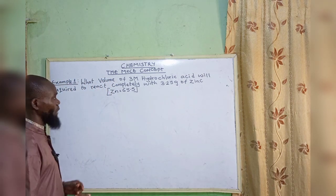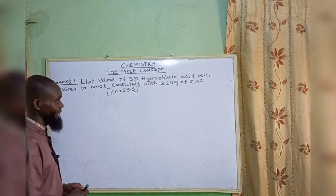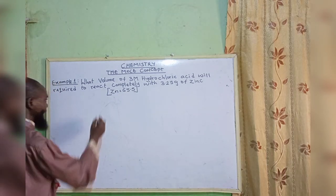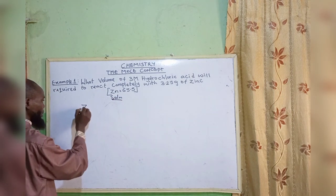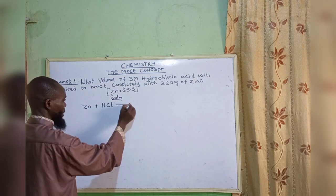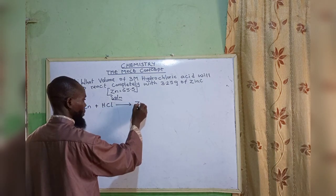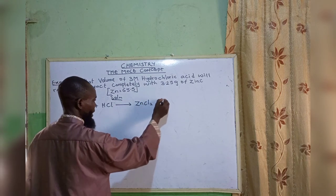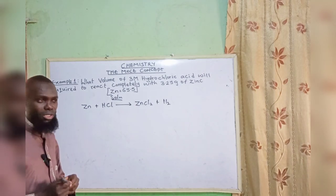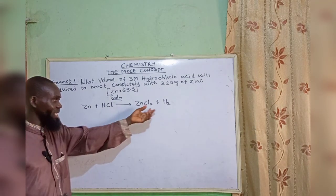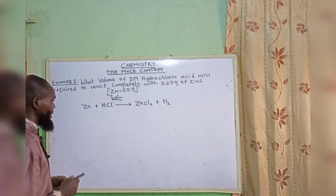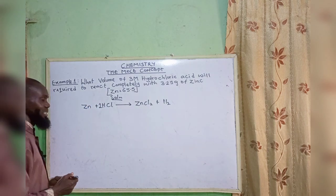Going back to the question: what volume of 3 molar hydrochloric acid will be required to react completely with 3.25 grams of zinc? This means zinc is reacting with hydrochloric acid, forming zinc chloride and hydrogen. We can refer back to our writing and balancing of chemical equations. Let us balance this — put two here — so it is balanced.